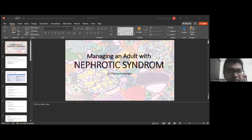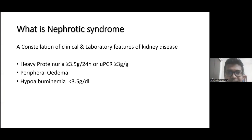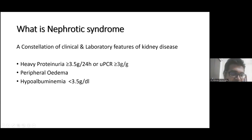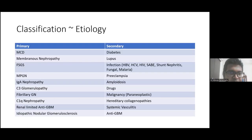Thank you for the kind introduction. Good afternoon everyone. The topic is managing an adult with nephrotic syndrome. Before we move on to management, nephrotic syndrome is a constellation of clinical and laboratory features related to kidney disease. It has three main features: heavy proteinuria measured as more than 3.5 grams on 24-hour urine collection or urine protein-creatinine ratio above 3 grams per gram, peripheral edema, and hypoalbuminemia.